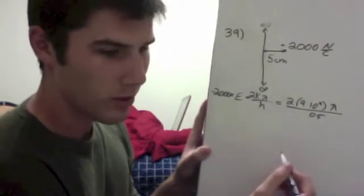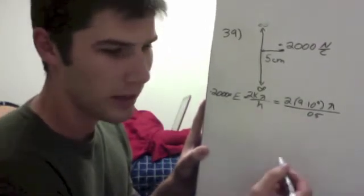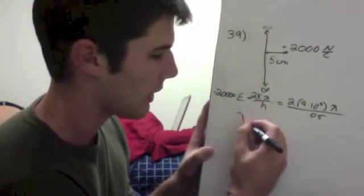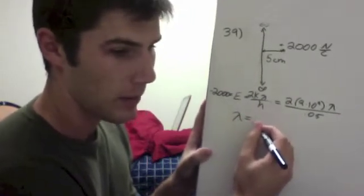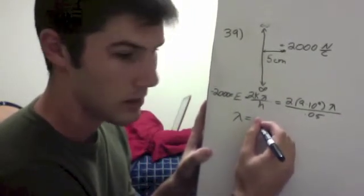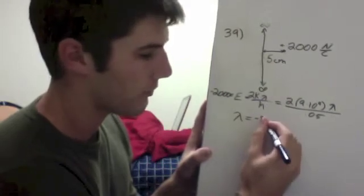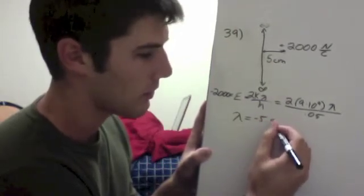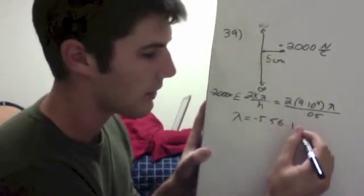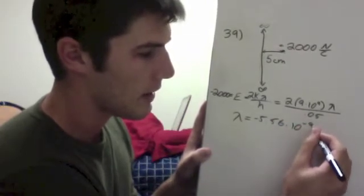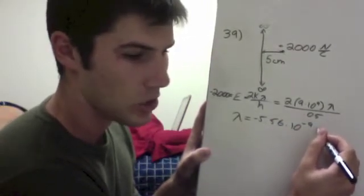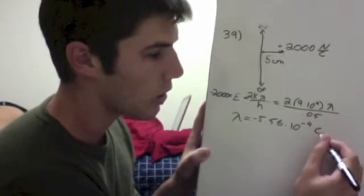Once we solve for lambda by plugging in everything, we get lambda equals negative 5.56 times 10 to the negative 9th coulombs per meter.